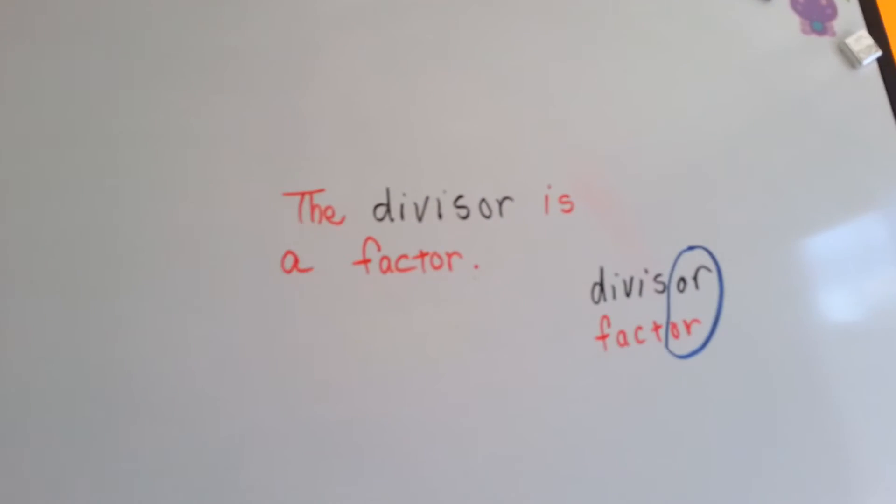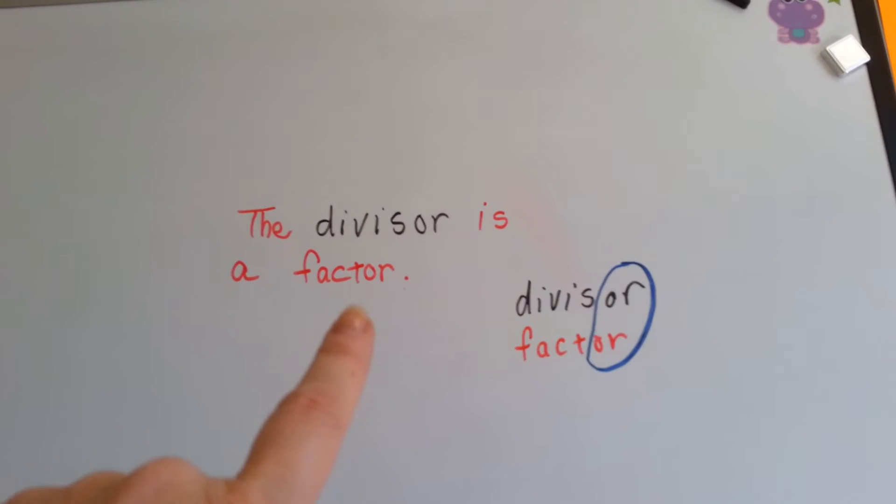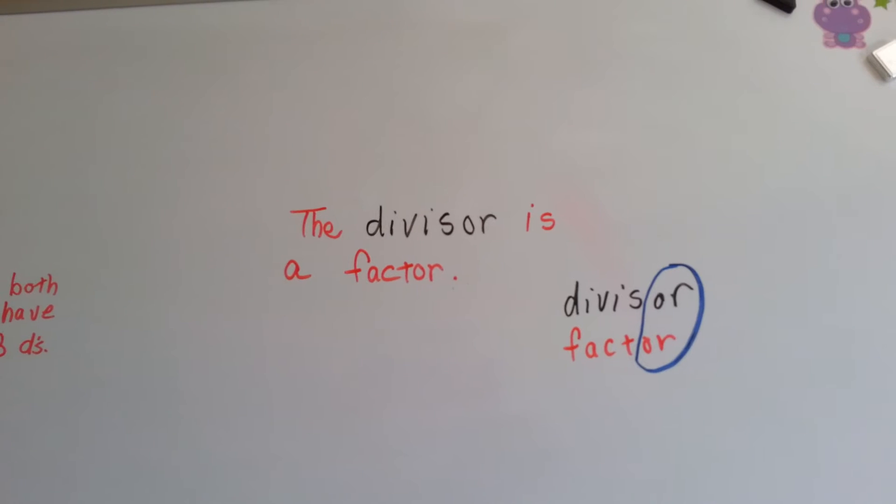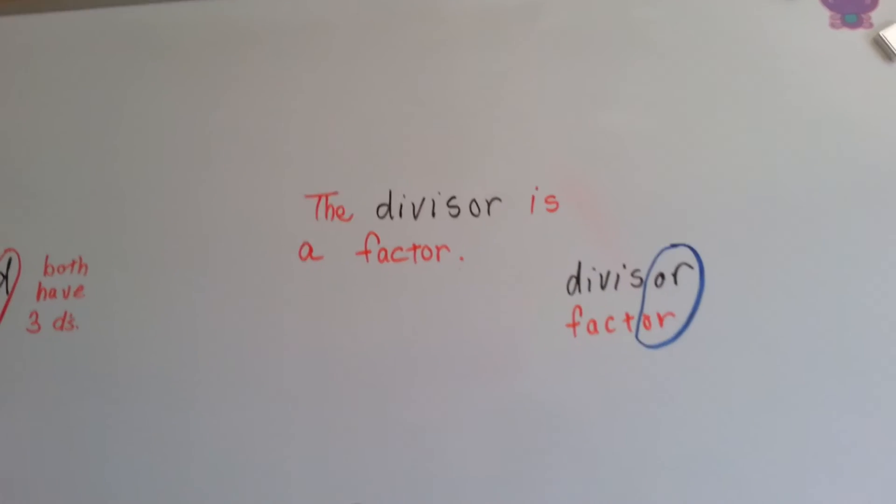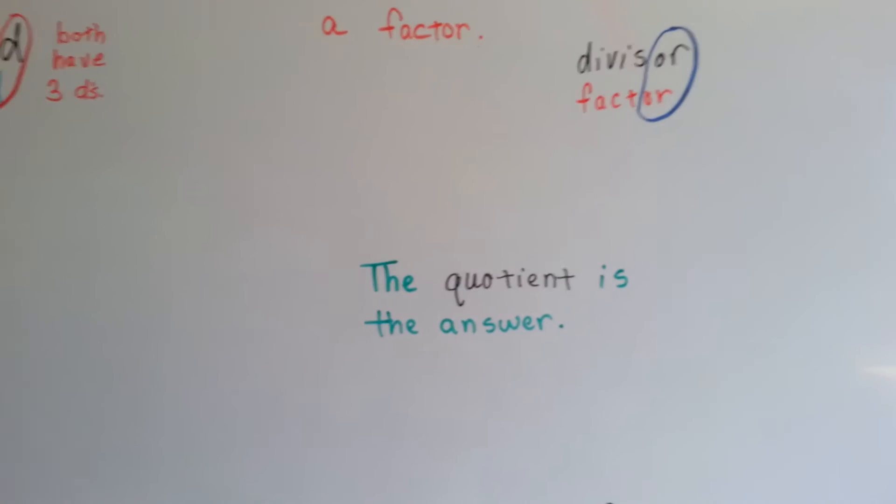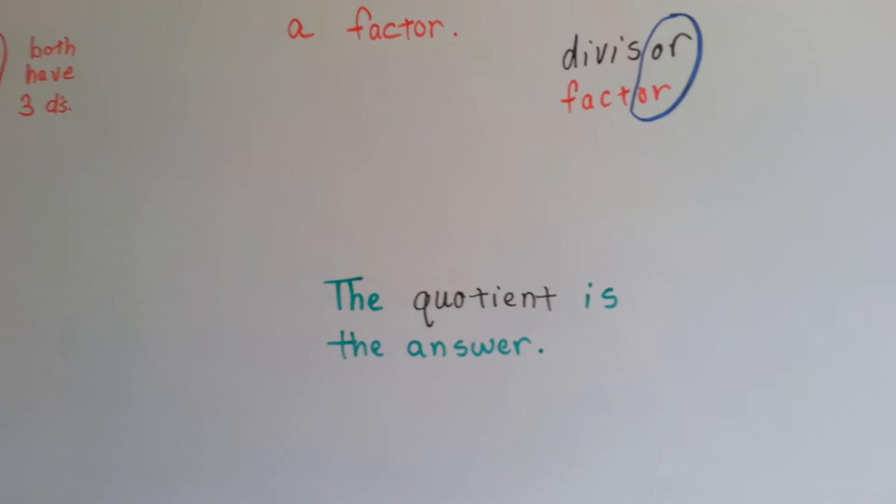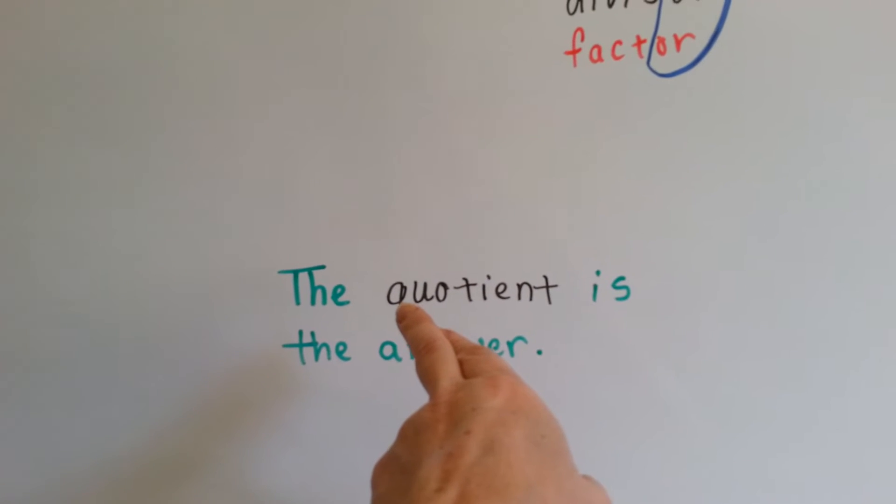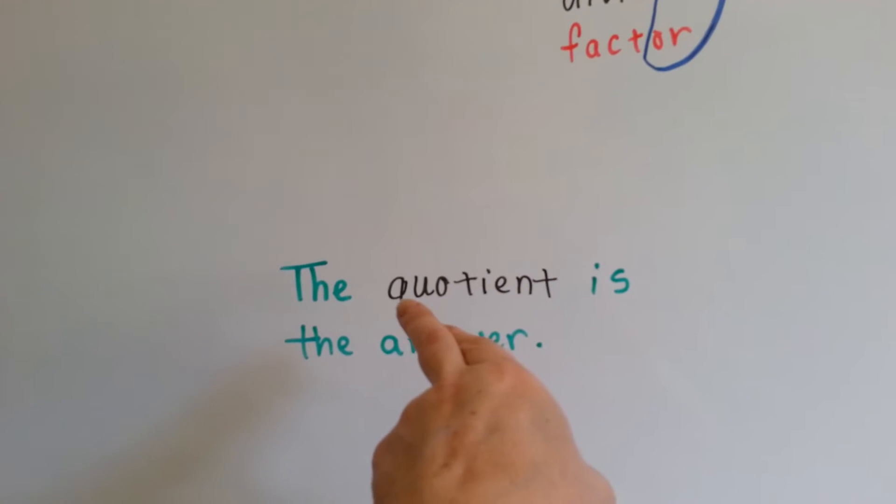The divisor is a factor. They both have OR. Just remember that the divisor is a factor. The quotient is the answer. There's not much I can do to help you on that, except maybe that the Q in quotient looks a little bit like an A if you take the tail away as an answer.